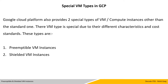Special VM types in GCP — Google Cloud Platform also provides two special types of VM compute instances other than standard ones. These VMs are special due to their different characteristics and cost standards. These are permittable VM instance and shield VM instance.